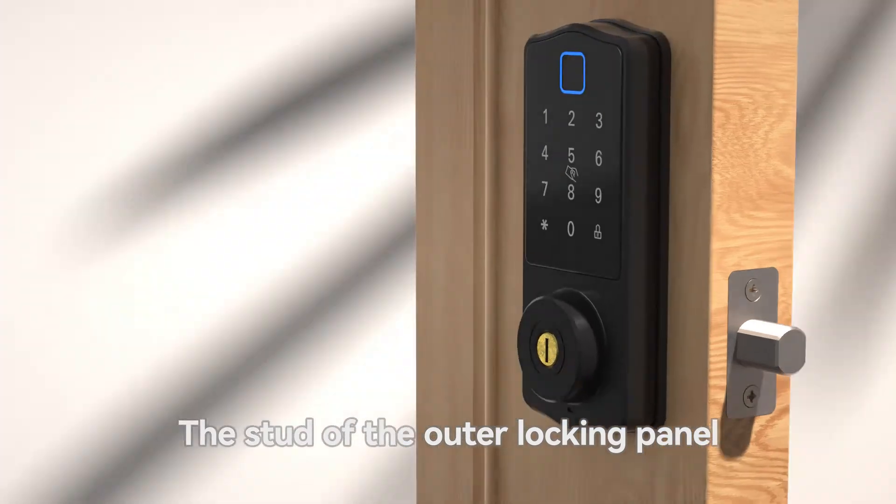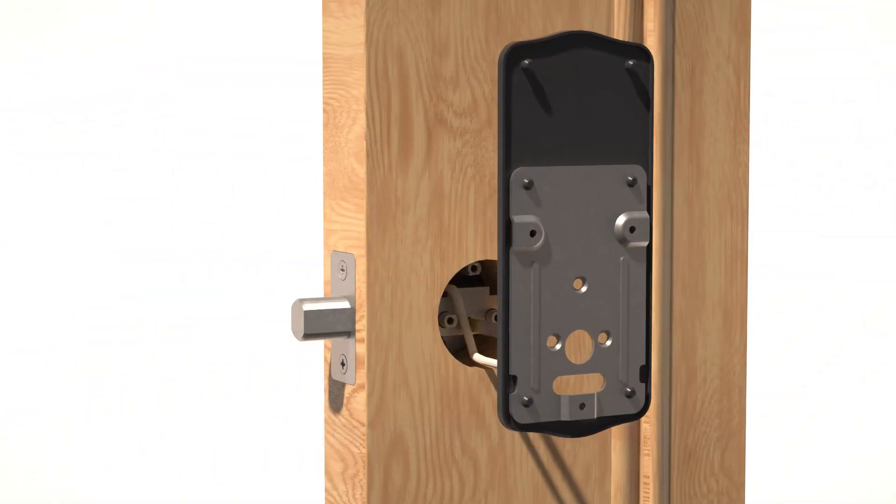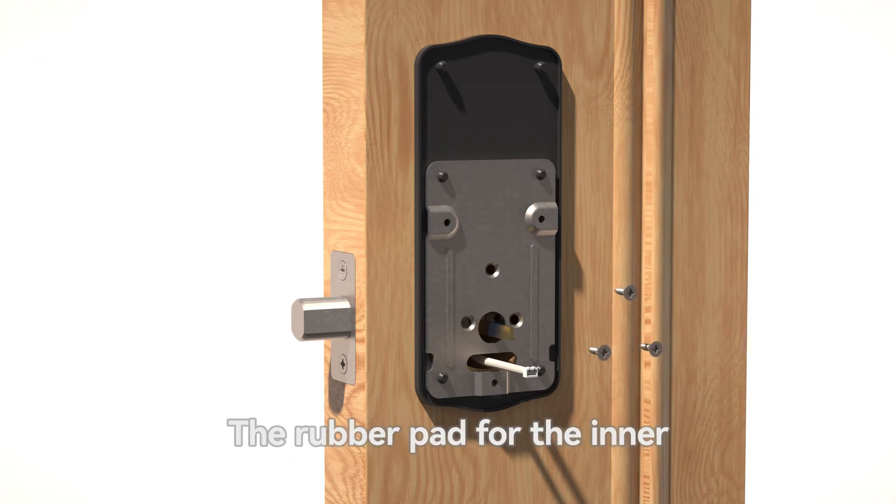The stud of the outer locking panel is installed on the door plate through the reserve hole of the locking body. The rubber pad for the inner lock is fixed with three screws.